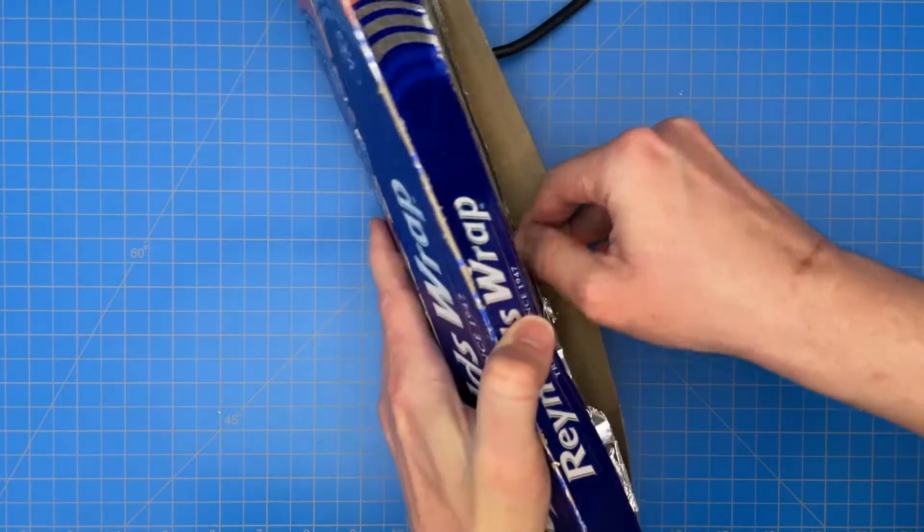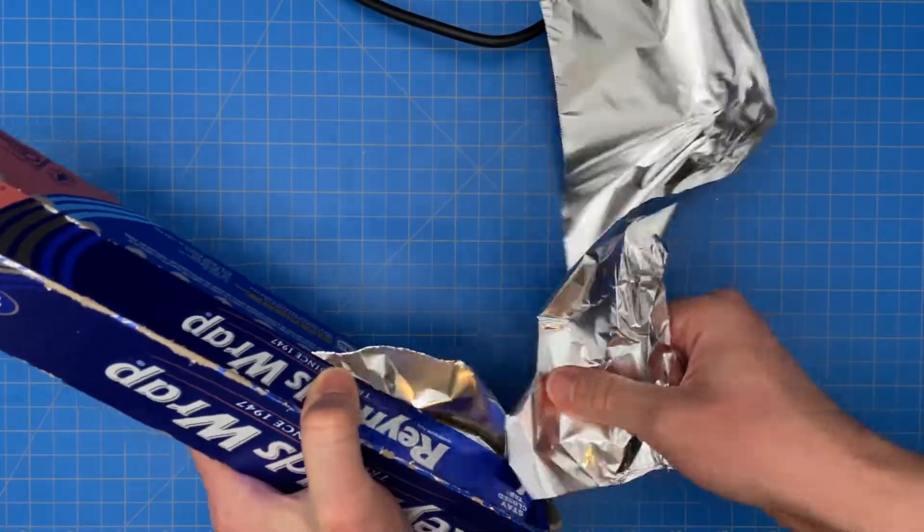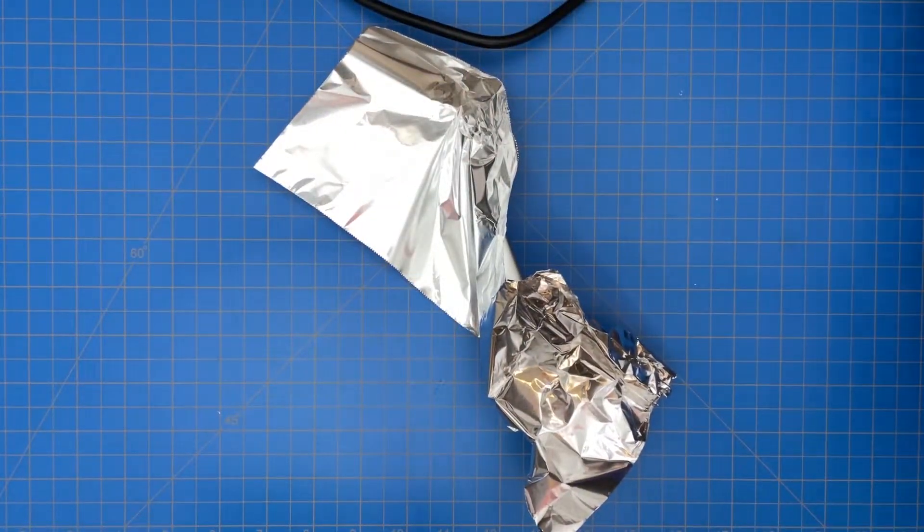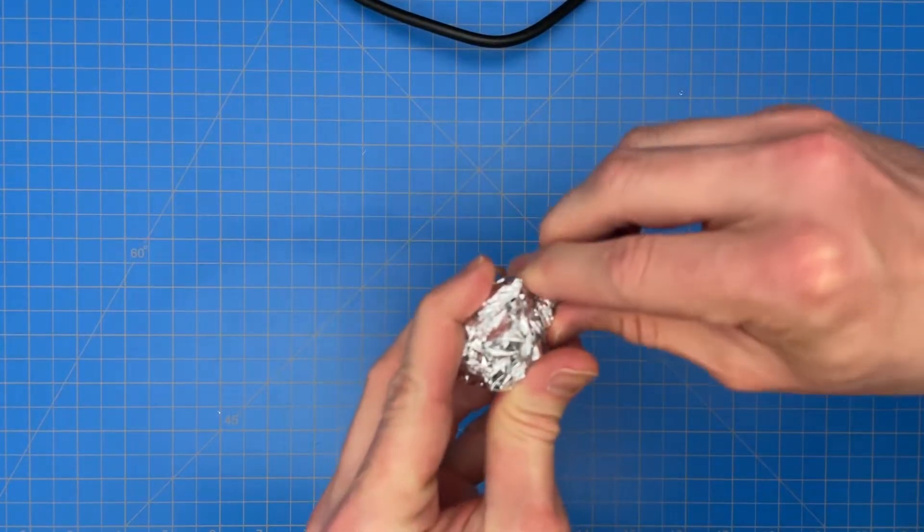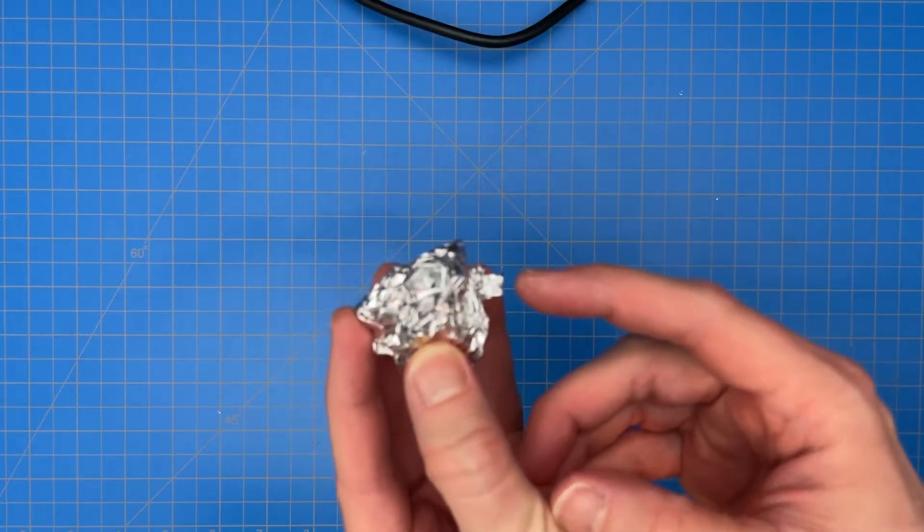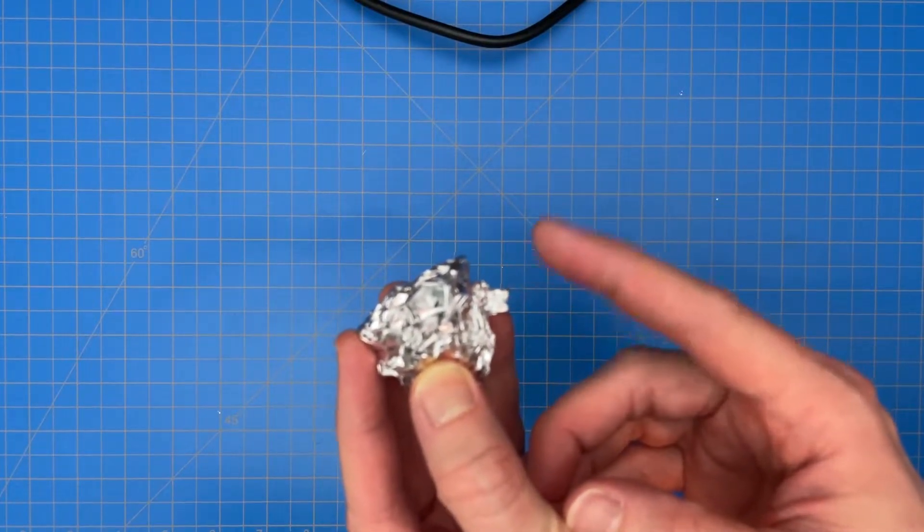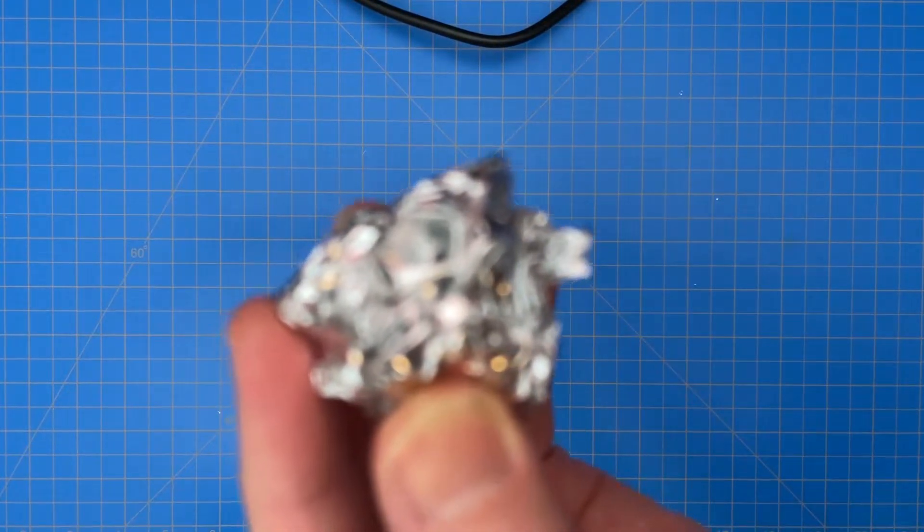Now we'll simply tear a piece of tin foil and make a ball out of it. Next, use your fingers to twist part of the tin foil so that it sticks out of the ball like this piece right here. It's important to have a piece of the tin foil sticking out like this so that it makes contact with the copper core of the coax cable.